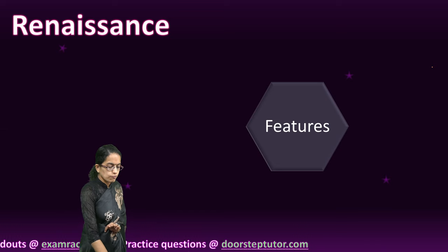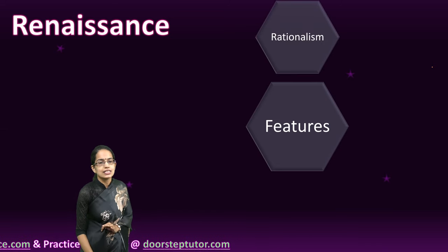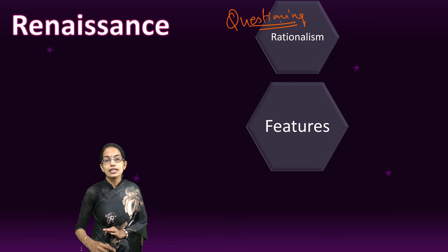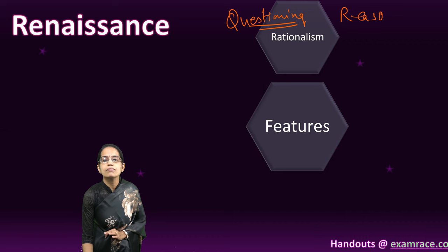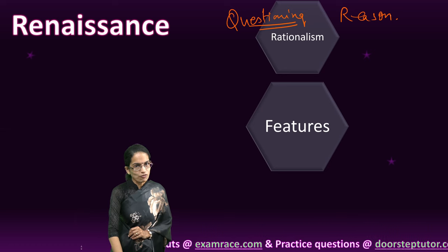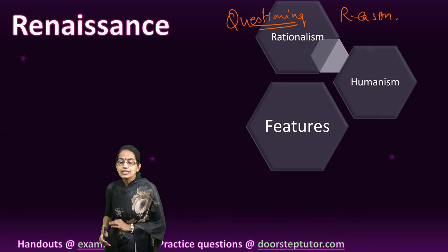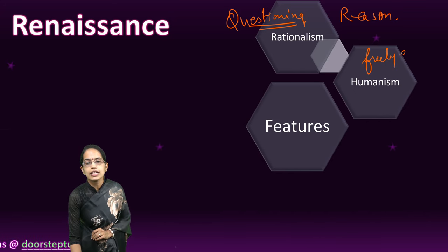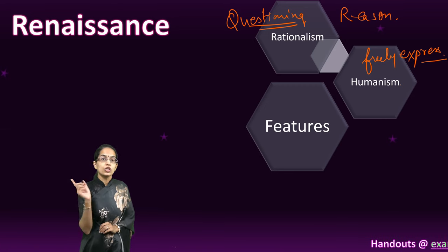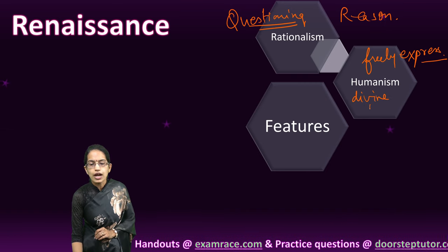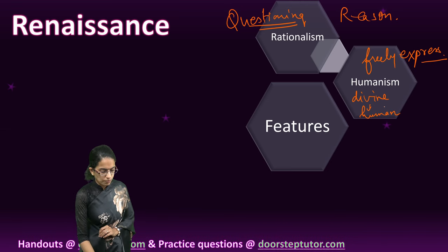There are four major features. The first important feature is rationalism — the idea and attitude of questioning, asking why certain things happen, and knowing the reason behind everything. The next important characteristic was humanism: allowing people to freely express their ideas and beliefs, and not focusing on the divine but focusing on the human. Moving from the idea of divine to human was the basis for humanism.